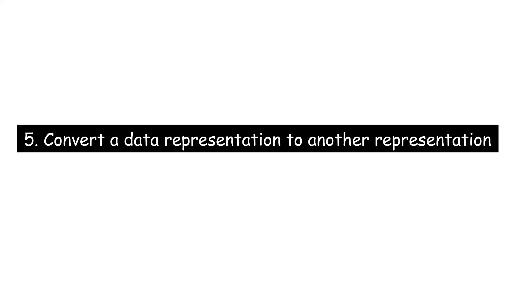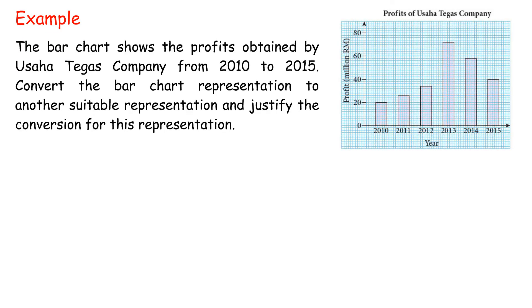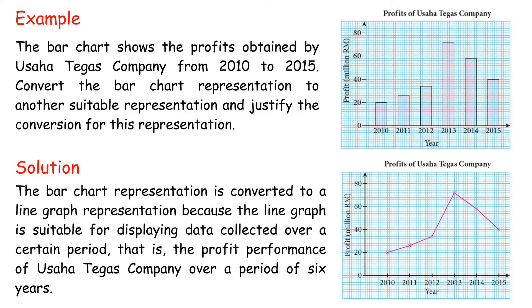Converting a data representation to another: Example: a bar chart shows the profits obtained by Wusaha Degu's company from 2010 to 2015. Convert the bar chart to another suitable representation. Solution: the bar chart is converted to a line graph because the line graph is suitable for displaying data collected over a certain period — specifically, the profit performance over a period of 6 years.